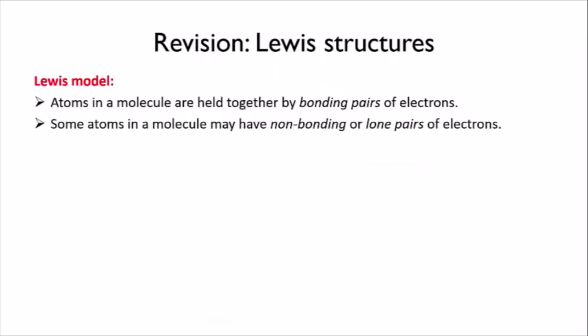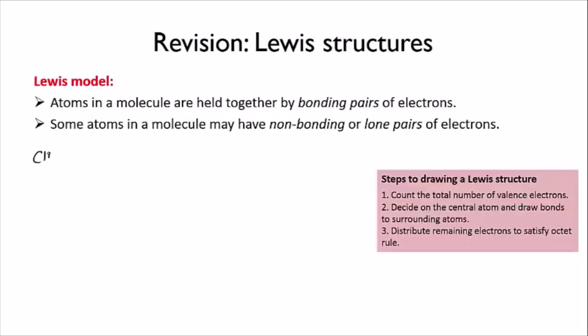So let's briefly go back and do a little Lewis structure revision. We're going to draw the Lewis structure for CHCl3, which is called trichloromethane or it used to be known as chloroform.